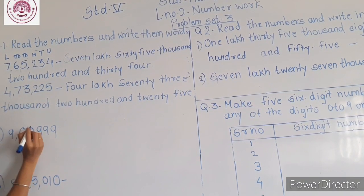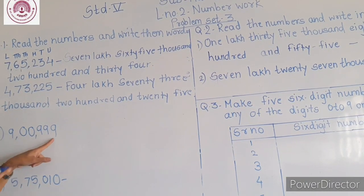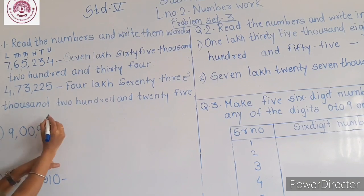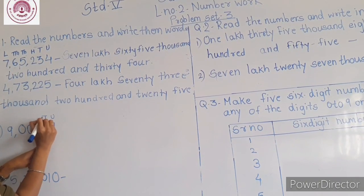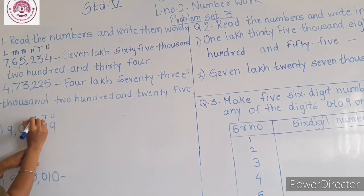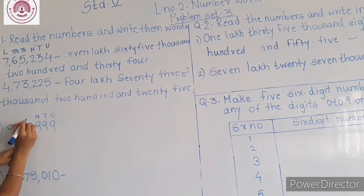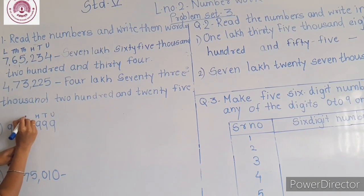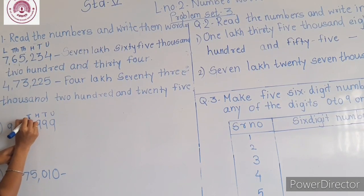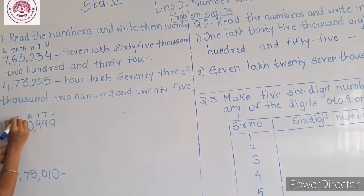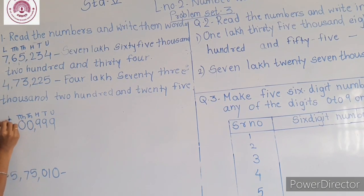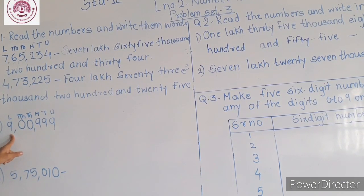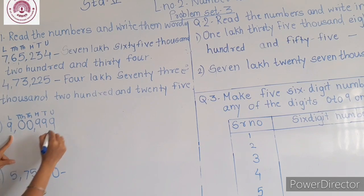Now the third one. Here, 9 is in the unit place, this 9 is in the tenth place, this 9 is in the hundredth place, this 0 is in the thousandth place, this 0 is in the ten thousandth place, and this 9 is in the lakhs place.